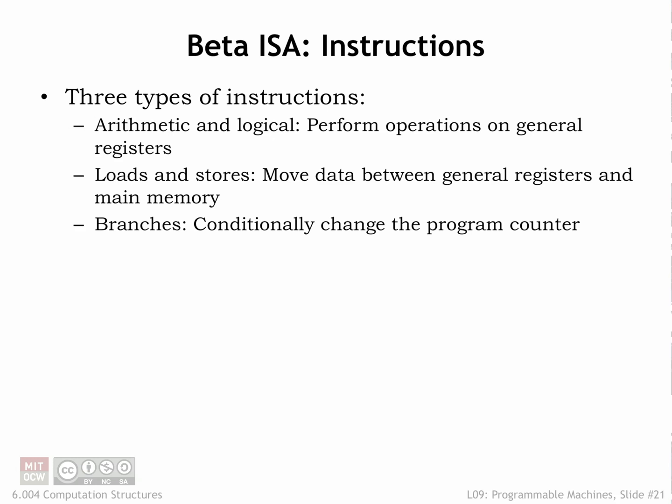Having talked about the storage resources provided by the Beta ISA, let's design the Beta instructions themselves. This might be a good time to print out a copy of the handout called the Summary of Beta Instruction Formats so you'll have it for handy reference. The Beta has three types of instructions: compute instructions that perform arithmetic and logic operations on register values, load and store instructions that access values in main memory, and branch instructions that change the value of the program counter.